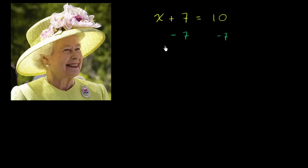And so what we're going to be left with is x, and then the 7s cancel out, is equal to 10 minus 7 is equal to 3. So that unknown is 3. And you can verify it. 3 plus 7 is indeed equal to 10.